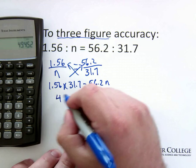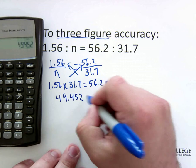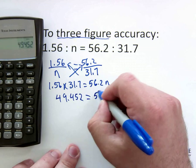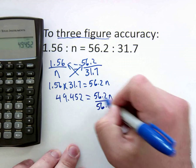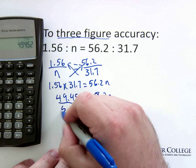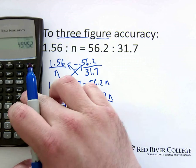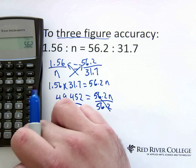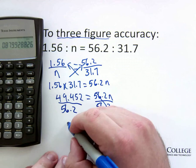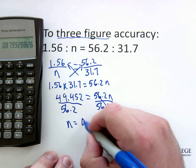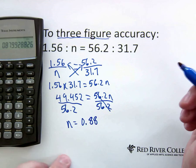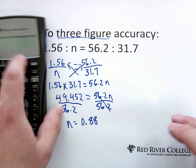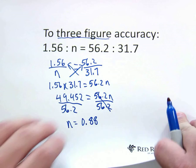So 49.452 is equal to 56.2n. We'll now divide by the 56.2. And three-figure accuracy, so n is equal to 0.88. So 1.56 to 0.88 is equal to 56.2 to 31.7.